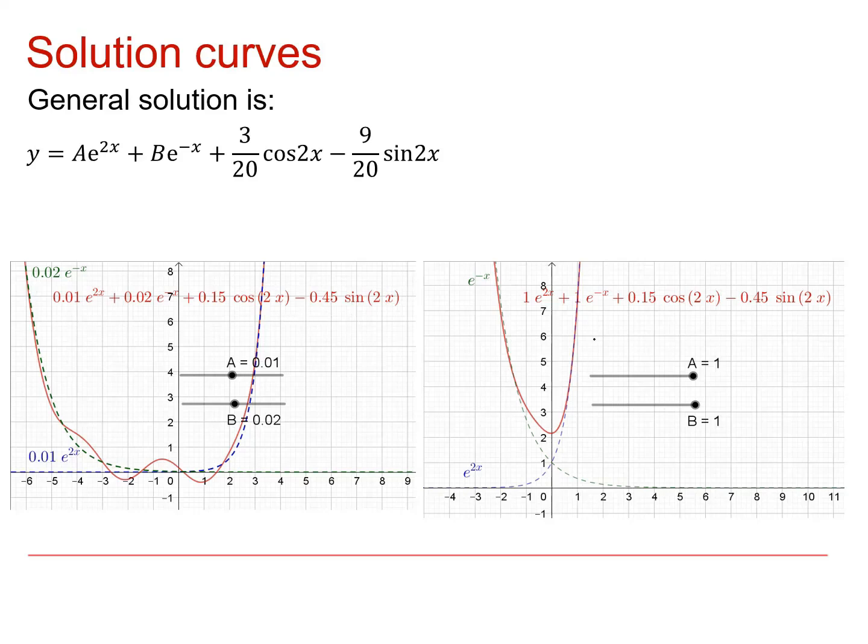If you look at the right-hand one, you'll see that because a and b are so much larger, the effect of the wiggle in the middle is somewhat ironed out. And that means that these two parts here don't really have as much effect in the middle. They're overshadowed by the size of e to the 2x and e to the minus x.